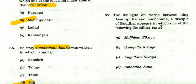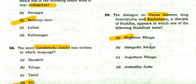The dialogue on varna between King Avantiputta and Kachana, a disciple of Buddha, appears in which Buddhist text? The right option is A: Majjhima Nikaya.